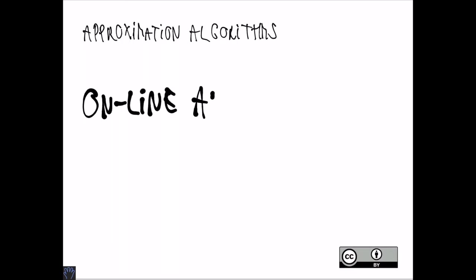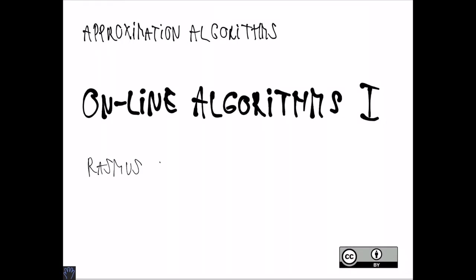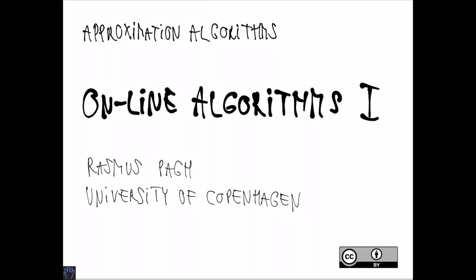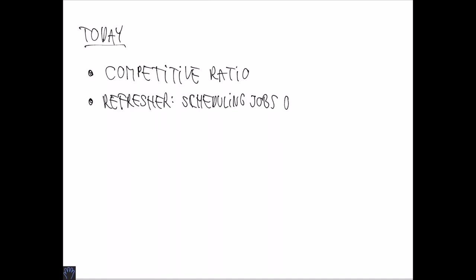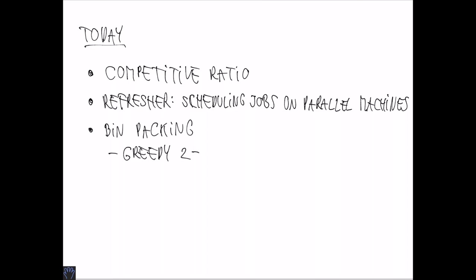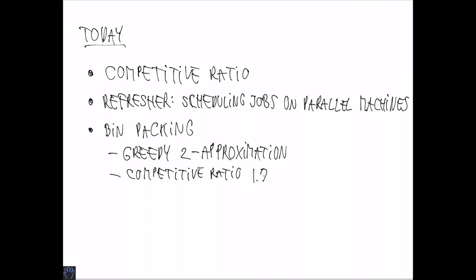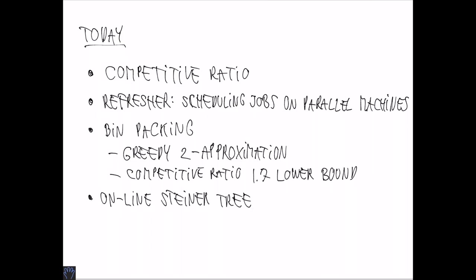Welcome to approximation algorithms and the lecture on online algorithms part 1. My name is Rasmus Pei. We'll start today by defining the key notion of competitive ratio. Then we are going to revisit the problem of scheduling jobs on parallel machines. Then we'll move on to bin packing, show a greedy 2-approximation algorithm, and also give a lower bound on the competitive ratio. Finally, we'll consider the online Steiner tree problem and show both lower and upper bounds.